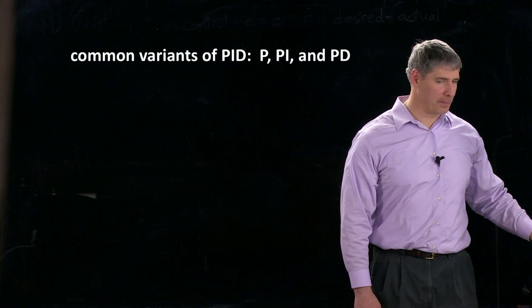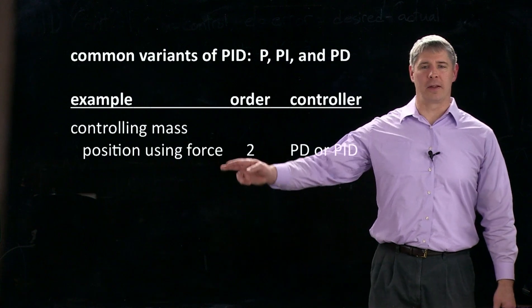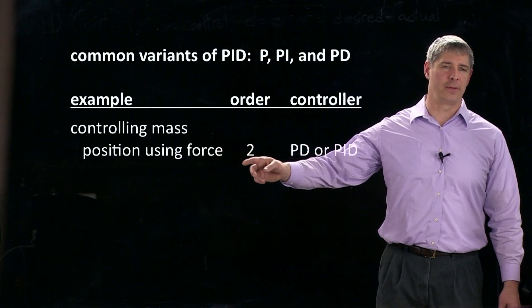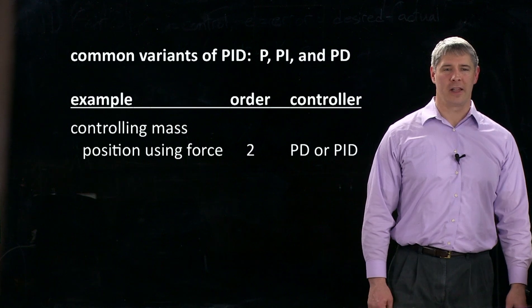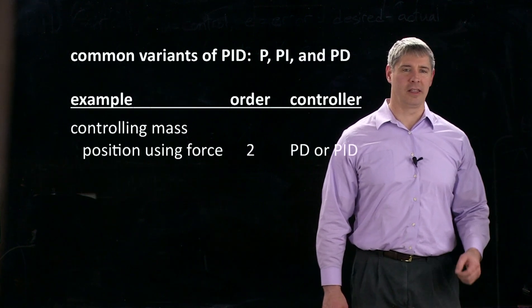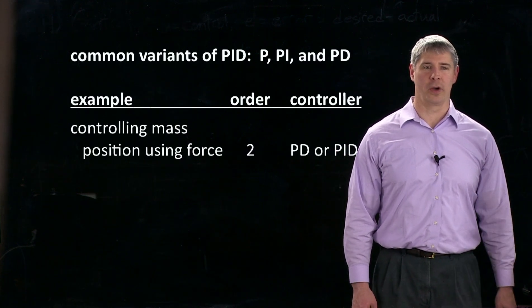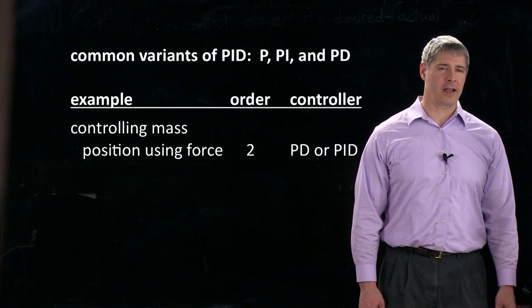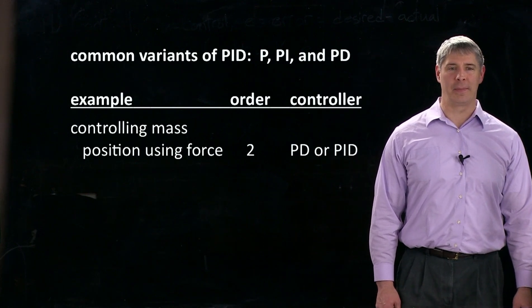So for example, controlling the position of a mass using a force. That's exactly the arm example. That's an order two system. Again, the output is two integrations away from the input. And for that kind of system, you typically need damping.